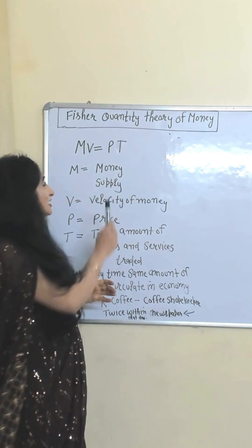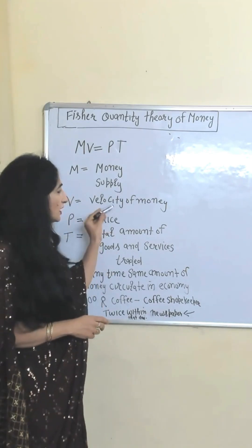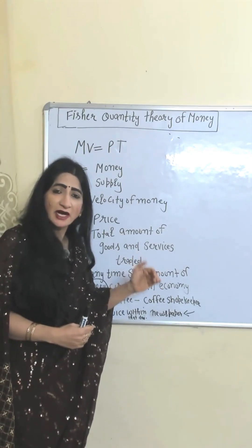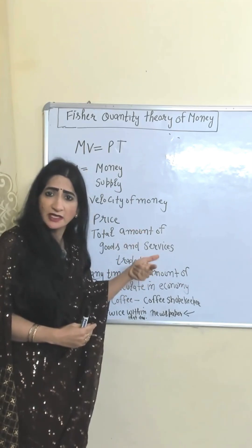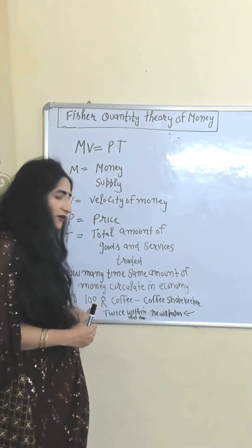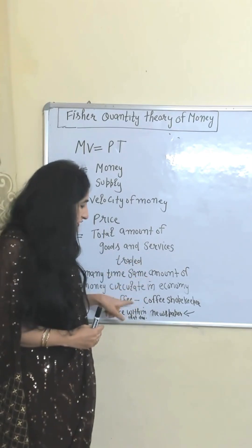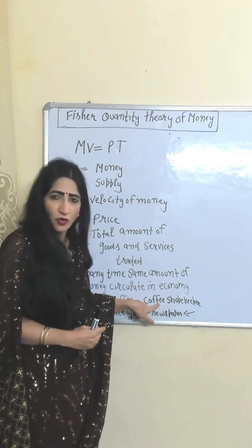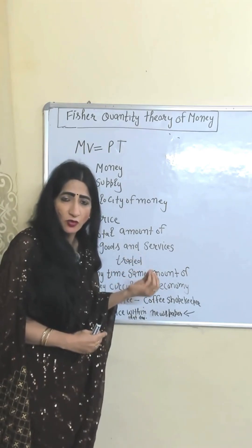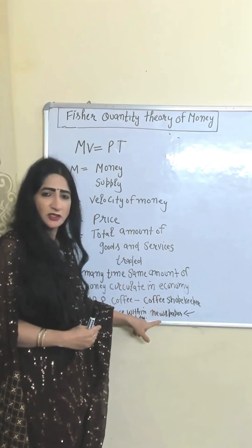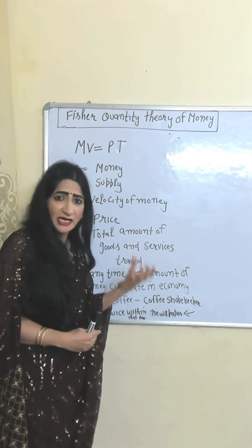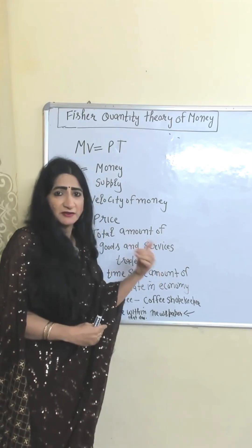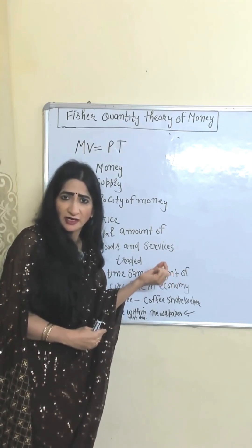M represents money supply. V represents velocity of money. Velocity of money means how many times the same amount of money circulates in the economy. For example, you have a 100-rupee note. With this 100-rupee note, you purchased coffee and gave it to the coffee shopkeeper. With the same 100-rupee note, the coffee shopkeeper purchased a newspaper. So you can say that the same 100-rupee note circulated twice within that day — that is called the velocity of that 100-rupee note.